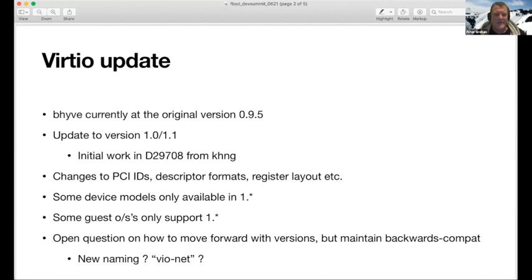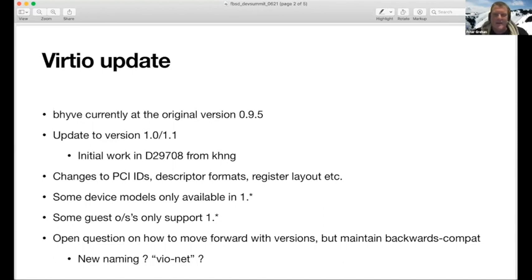VirtIO version one rationalized some of the data structures shared between a host and a guest — it's not really that different. But what's happened is that some guests only support version one and don't support the older version. Some device types are only described in version one with no 0.9.5 equivalent. The longer Beehive supports only 0.9.5, the more problems we're going to have. The most recent case was VirtIO input, which is not supported on Linux in anything other than version one. There is work that has been done providing infrastructure to upgrade to version 1.0 and 1.1, and hopefully we'll be able to put that in soon.